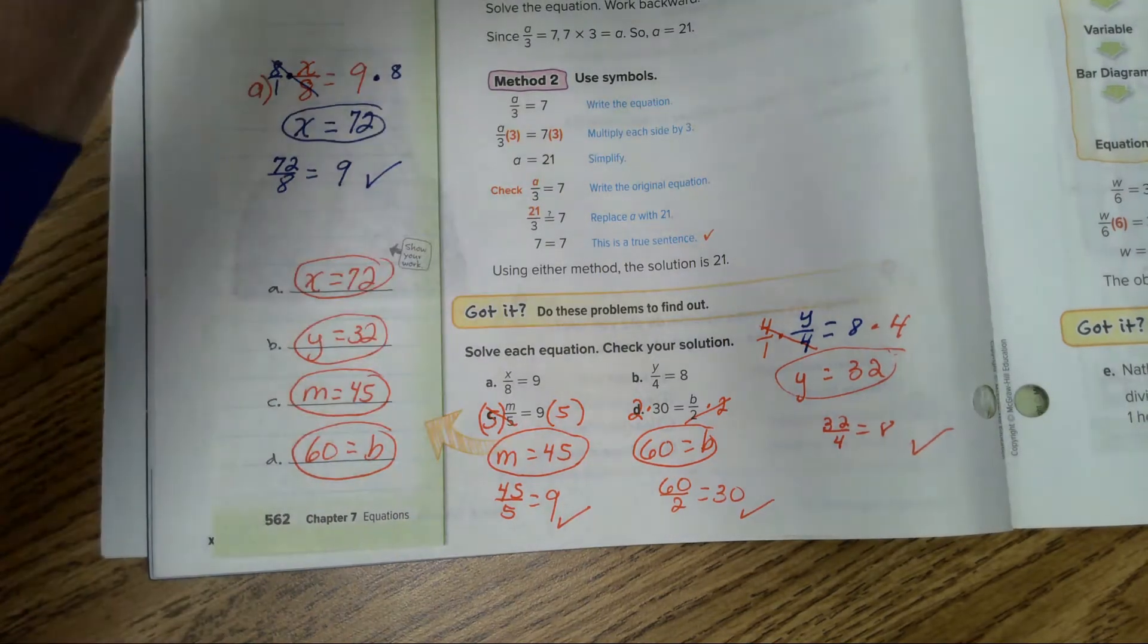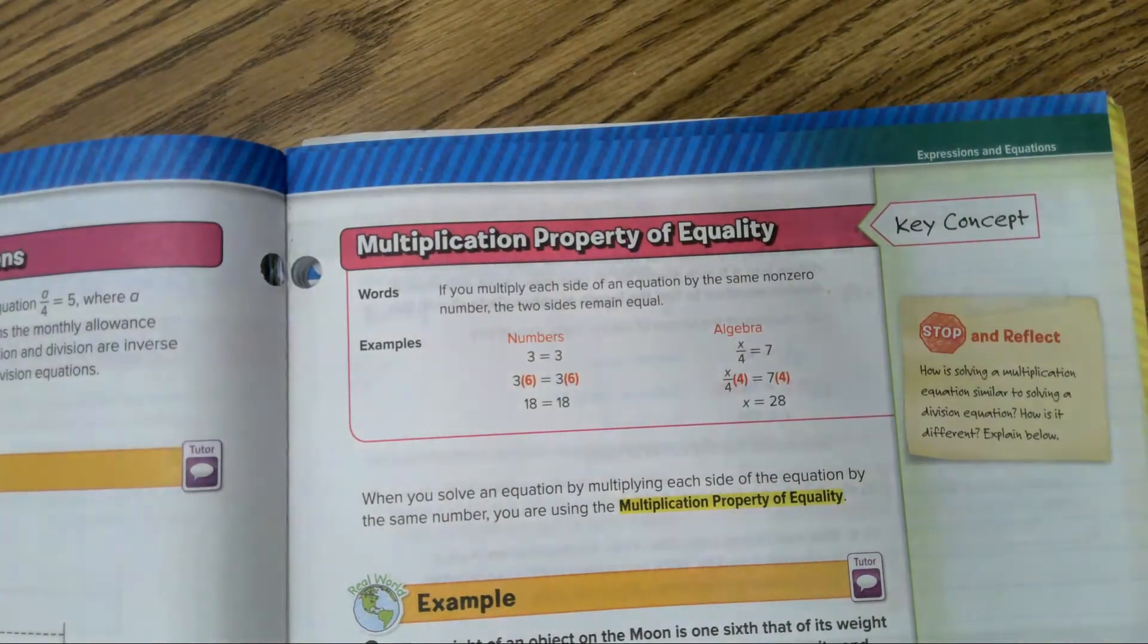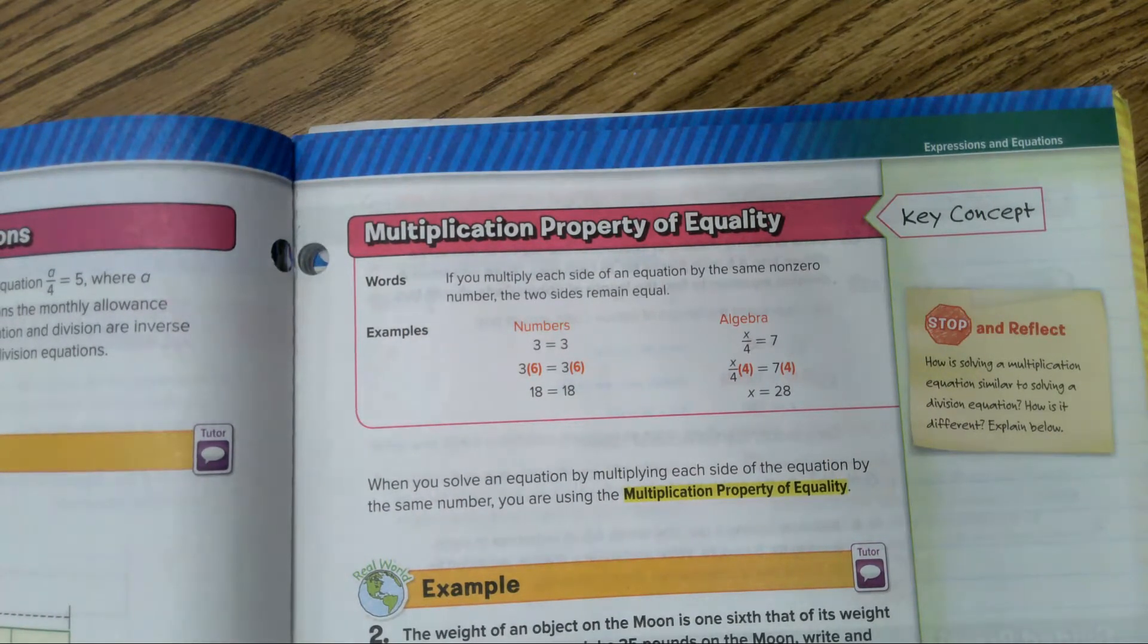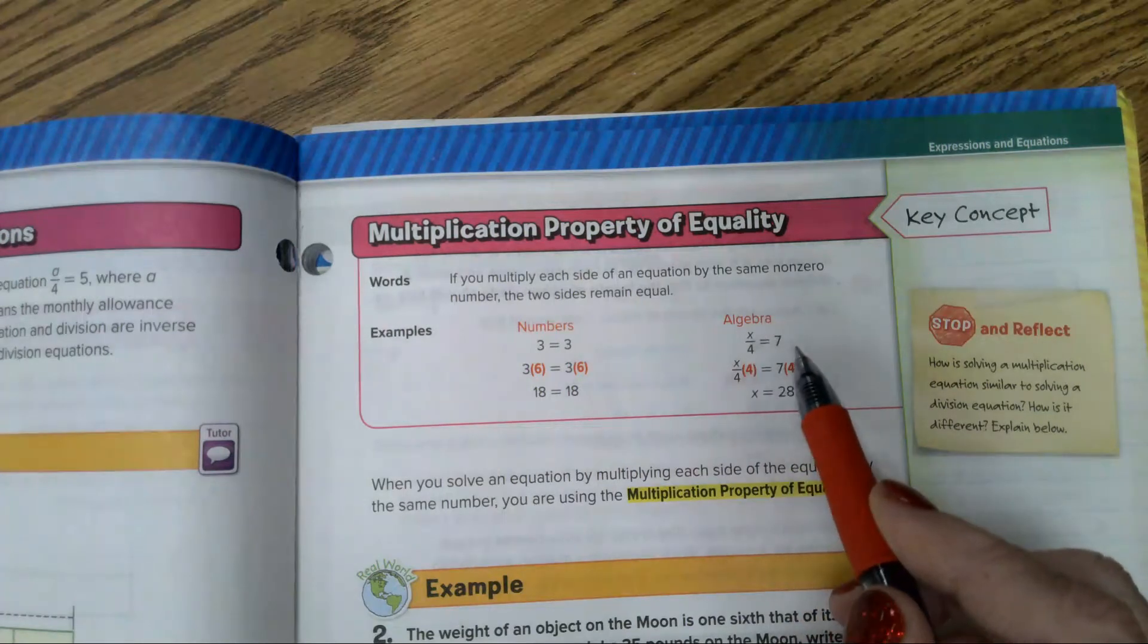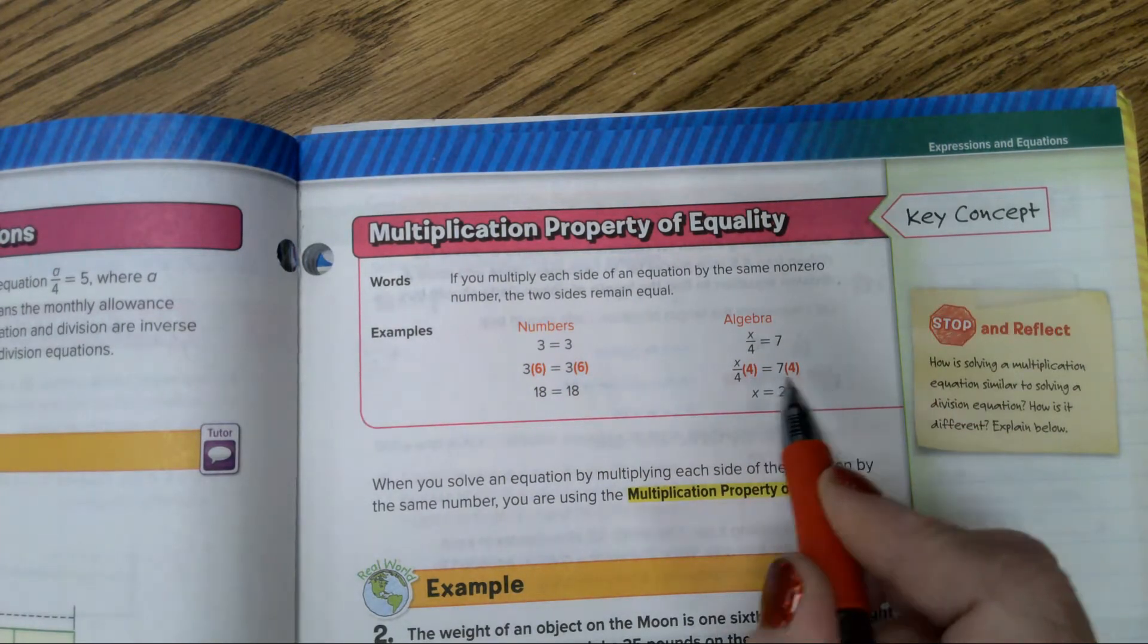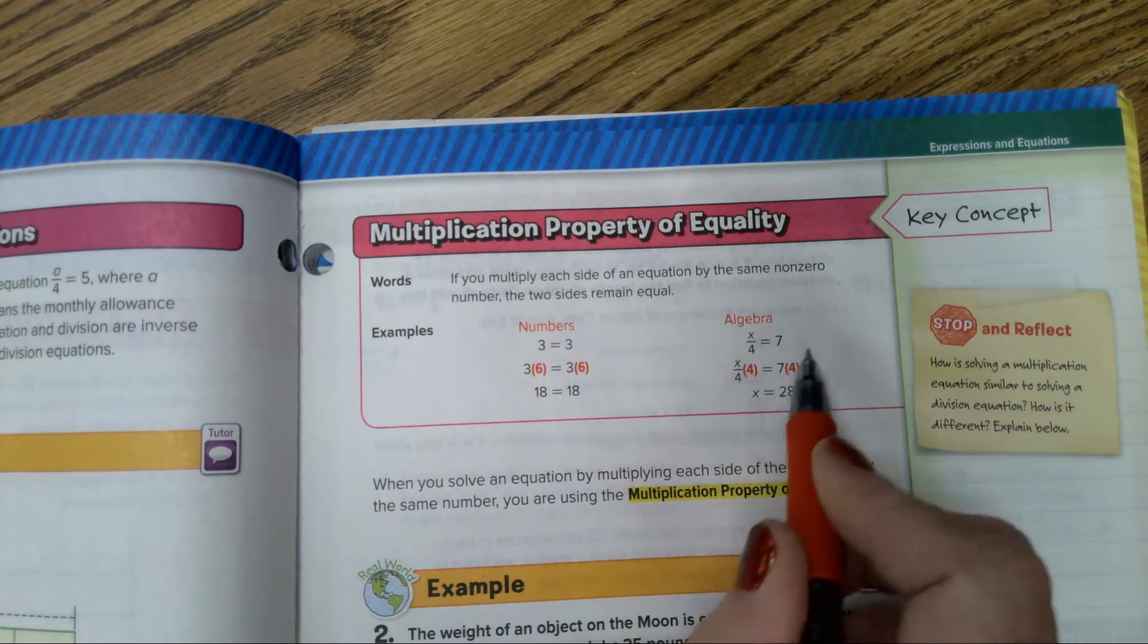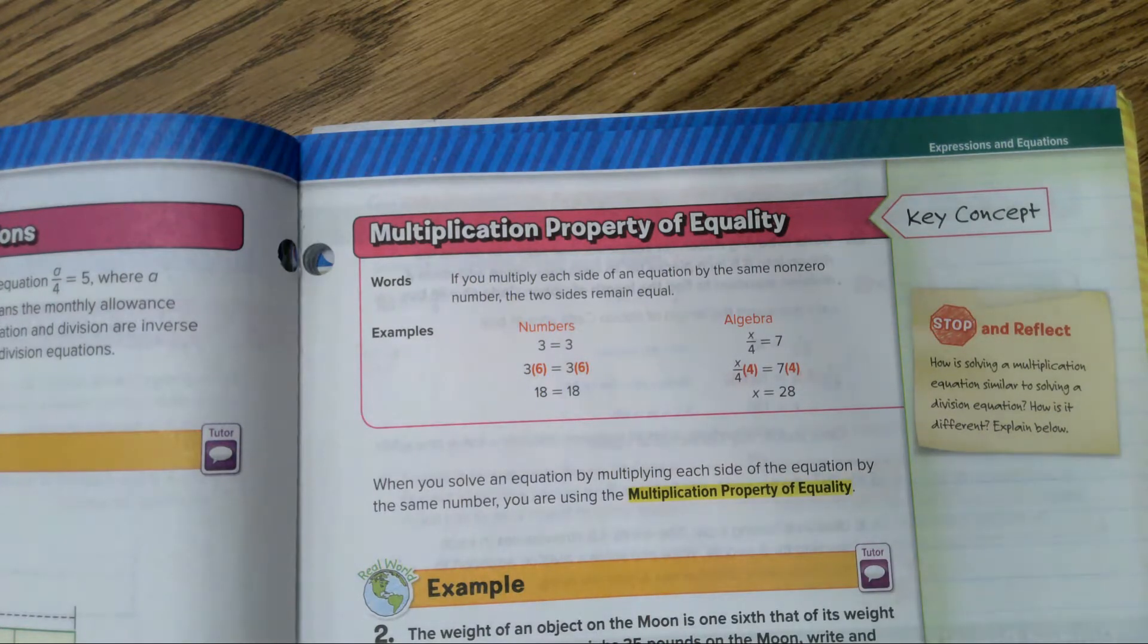Page 563. The multiplication property of equality states, if you multiply each side of an equation by the same non-zero number, the two sides remain equal. You are balancing the equation. So here, X divided by 4 equals 7. Multiply both sides by 4. Here they show multiplying it on the right side. It's okay if you would put the 4 on this side. It doesn't have to be on that side. You get 28.